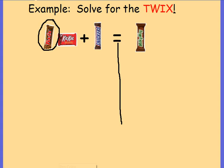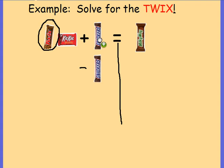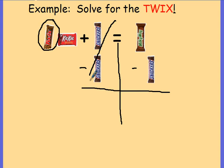So, if we were to get the Twix alone, which candy bar can we remove first — the Snickers or the Kit Kat? If you guessed the Snickers, you are correct. I'm going to subtract the Snickers from both sides of this equation. If I subtract it here, I must also subtract it from the Milky Way. And when I do this, my Snickers will go away over here.